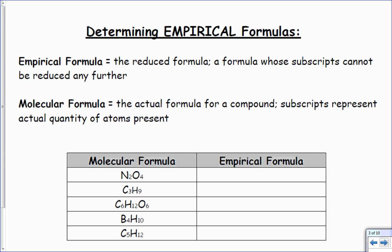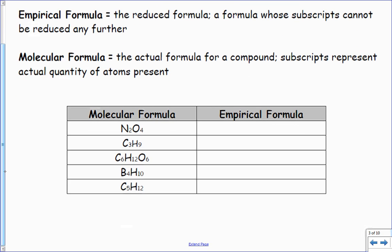The empirical formula is the reduced formula. If I can divide by 2, I've got to do that. If I can divide by 3, I've got to do that. For example, with N2O4, I can divide both by 2, so the empirical formula will be NO2. What is common in C3H9? It's 3, so if I divide both by 3 I will get CH3. C6H12O6, in this case 6 can go into all, so that's going to be CH2O.